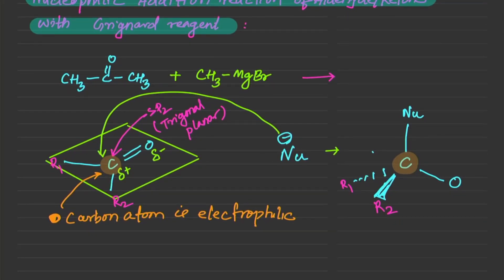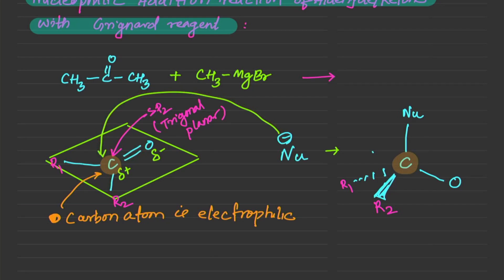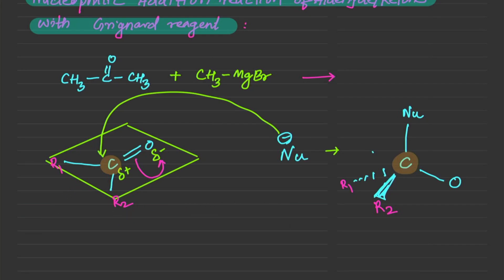Notice what happens to the pi bond when the nucleophile approaches. Carbon already has four bonds, and if we add another bond it would have five, so to maintain the octet it pushes the pi electrons towards oxygen. When the electrons get pushed towards oxygen, you see a negative charge on oxygen — that is the intermediate we are making.